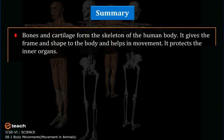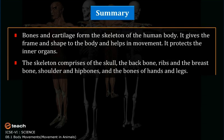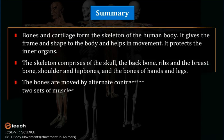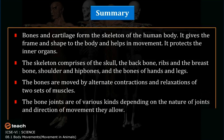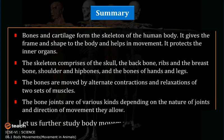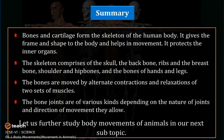Bones and cartilage form the skeleton of the human body. It gives the frame and shape to the body, helps in movement, and protects the inner organs. The skeleton comprises the skull, the backbone, ribs and the breast bone, shoulder and hip bones, and the bones of the hands and legs. The bones are moved by alternate contractions and relaxations of two sets of muscles. The bone joints are of various kinds depending on the nature of the joint and the direction of movement they allow. Let us further study about body movements of animals in our next subtopic.